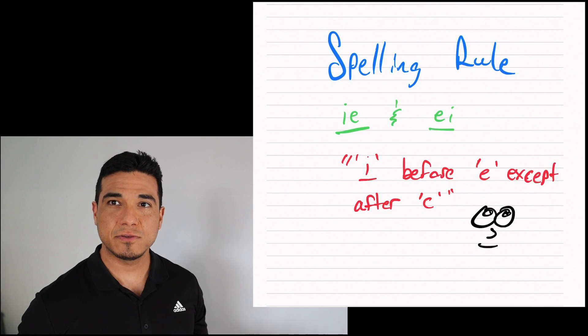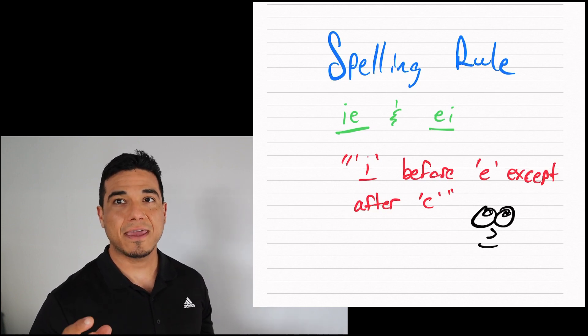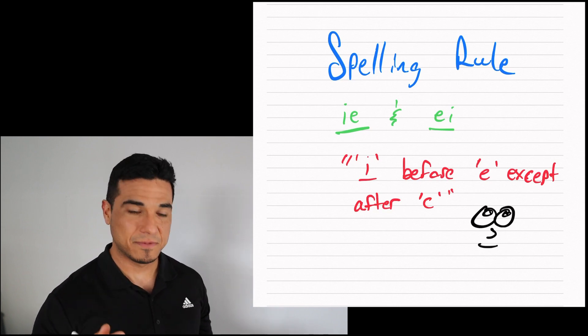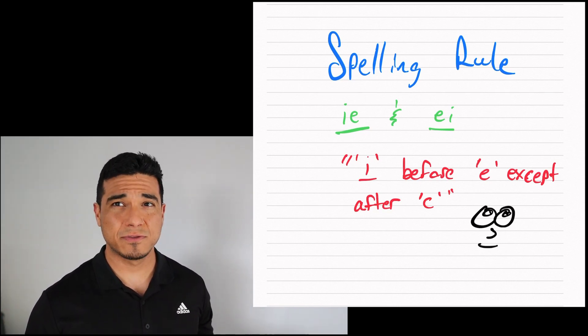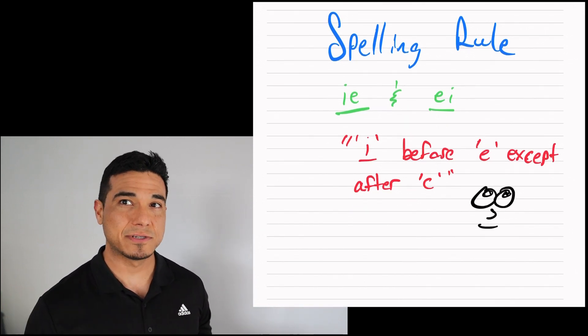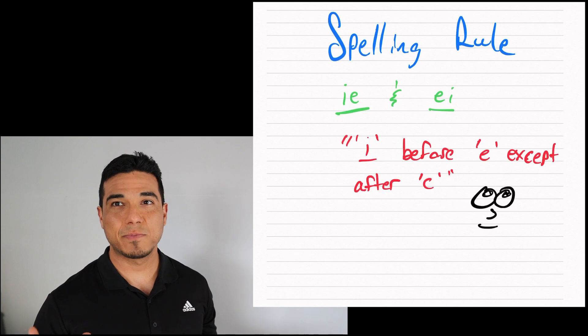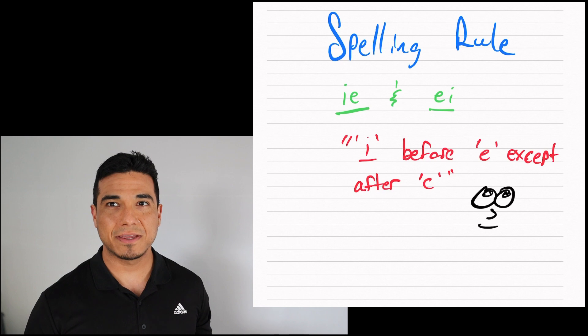For today's video, we're going to examine the rules involved with the letters IE and interchanged EI. Same letters, just different orientations. Many of us learn this rule with the rhyme I before E except after C. Not the best poem, but it is pretty effective in terms of committing this rule to memory. So again, it's I before E except after C.